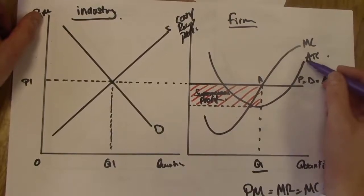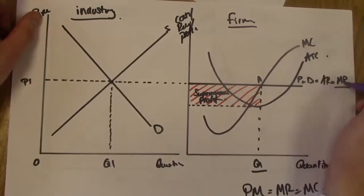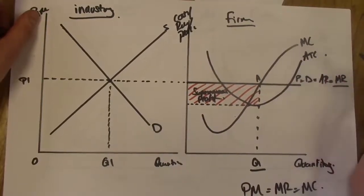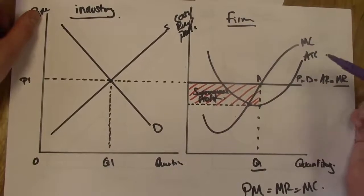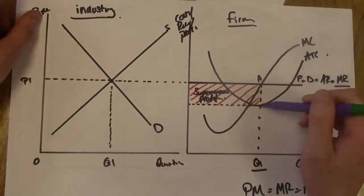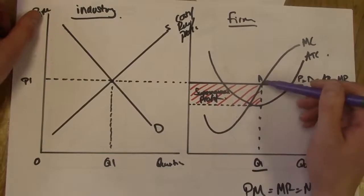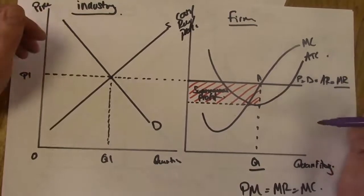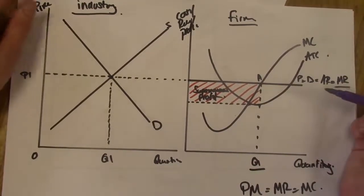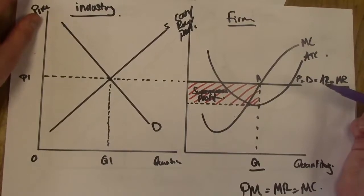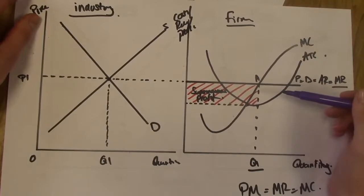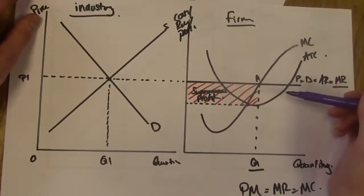Looking at the relationships between the ATC curve and the MR curve - marginal revenue and average cost - a profit is any revenue above the firm covering its total cost. At this point the firm is covering its cost and revenue is above cost, so the firm is bringing in more through revenue than it's paying out through costs. In the last video we said that supernormal profit acts as an incentive for new firms to enter the industry, and we're going to show the impact of that on our next diagram.